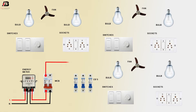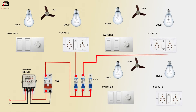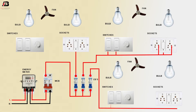Phase connection outgoing from MCB to circuit breaker 1, 2 and 3. Phase connection outgoing from circuit breakers to room 2, also room 3, sockets and switches. Phase connection outgoing from circuit breaker 3 to room 1 switches and sockets board.